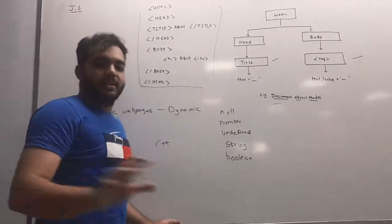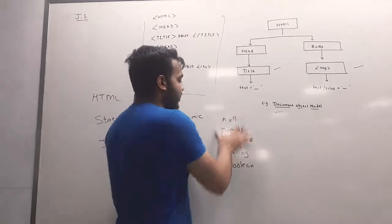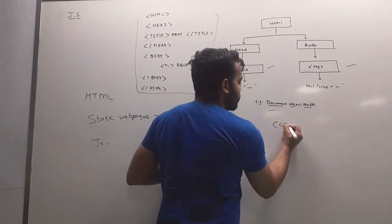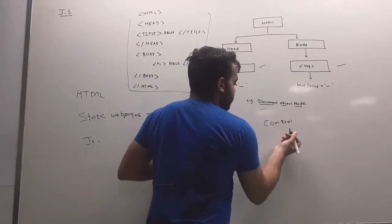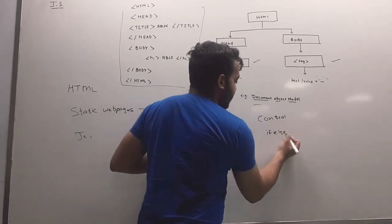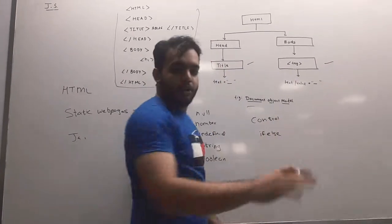This JavaScript is similar in operations like Java. In JavaScript, we have four control loops: if-else, if-else, and other control loops.